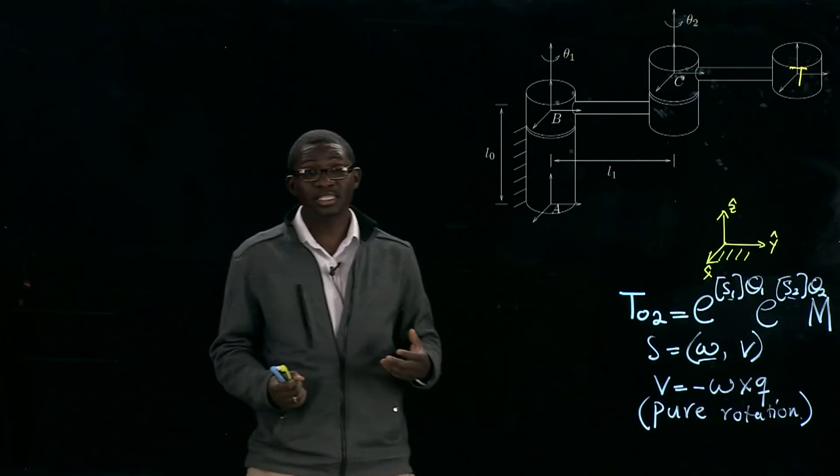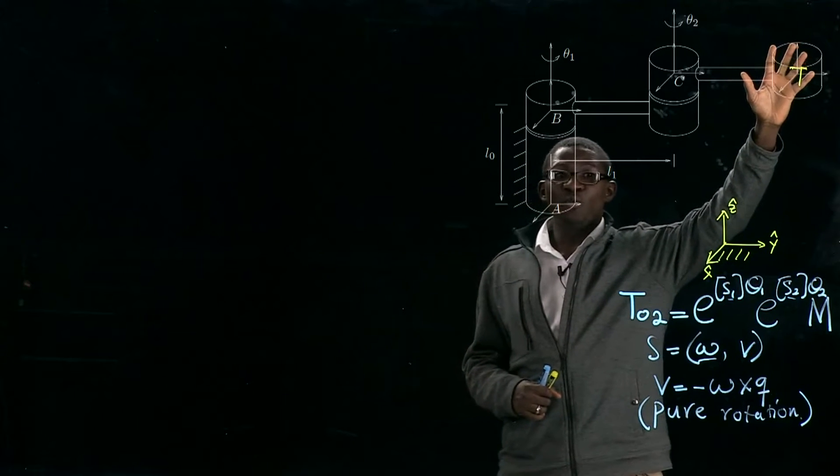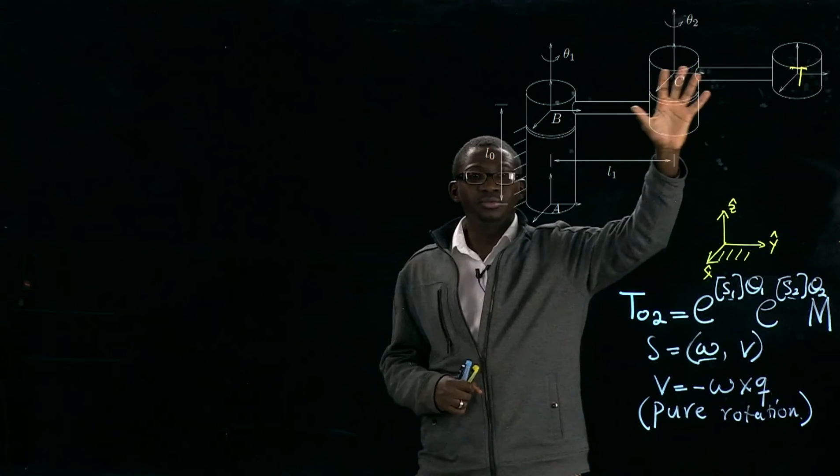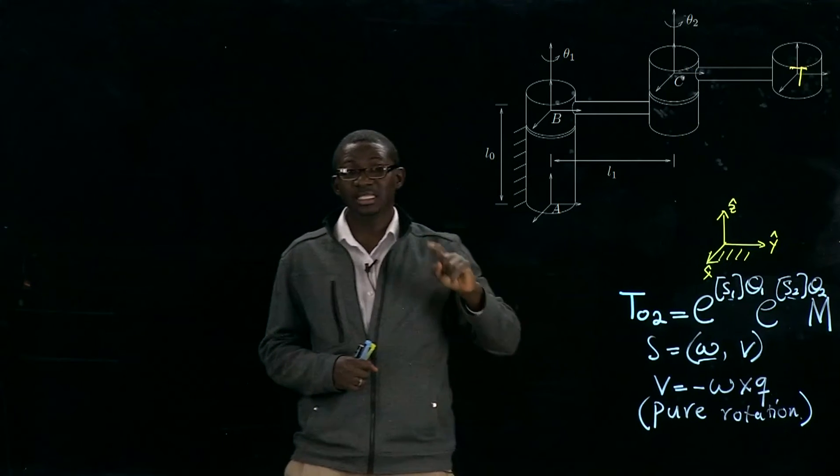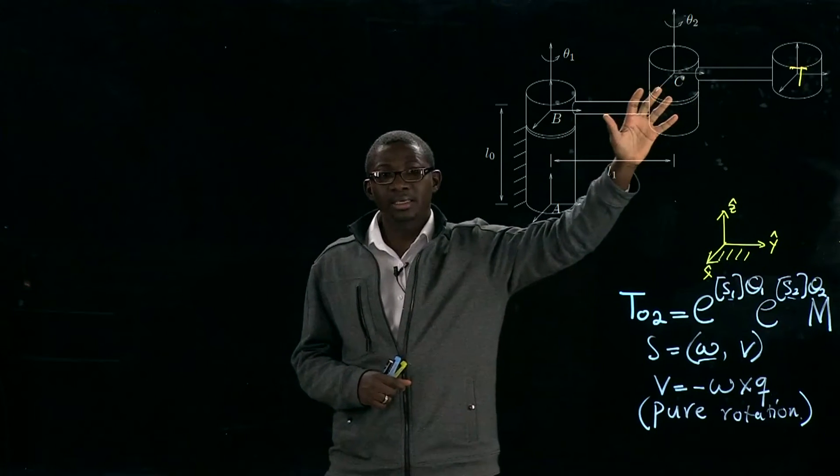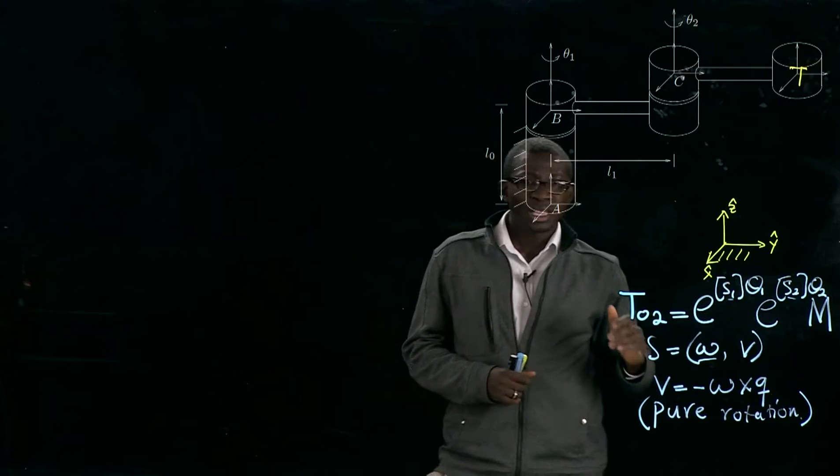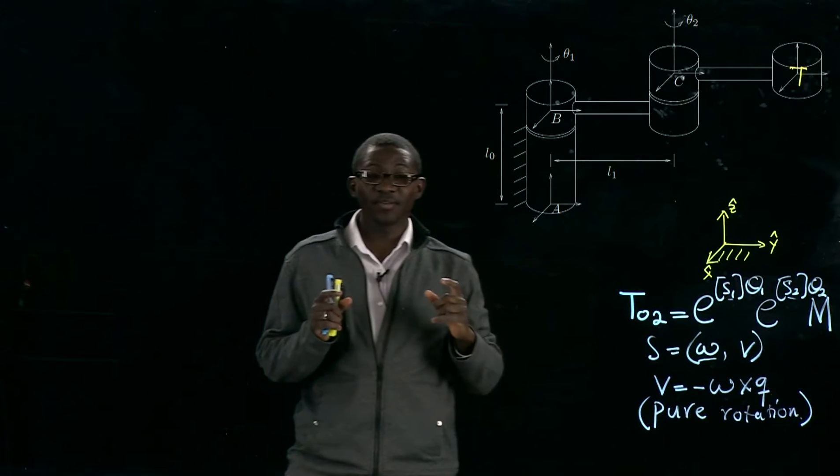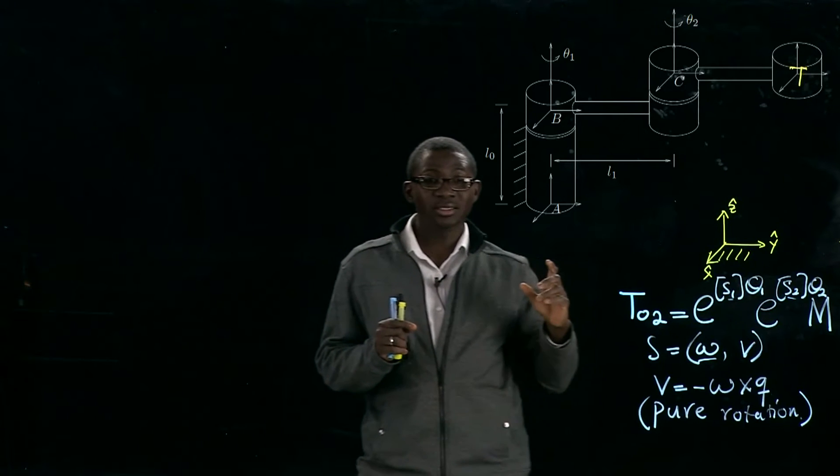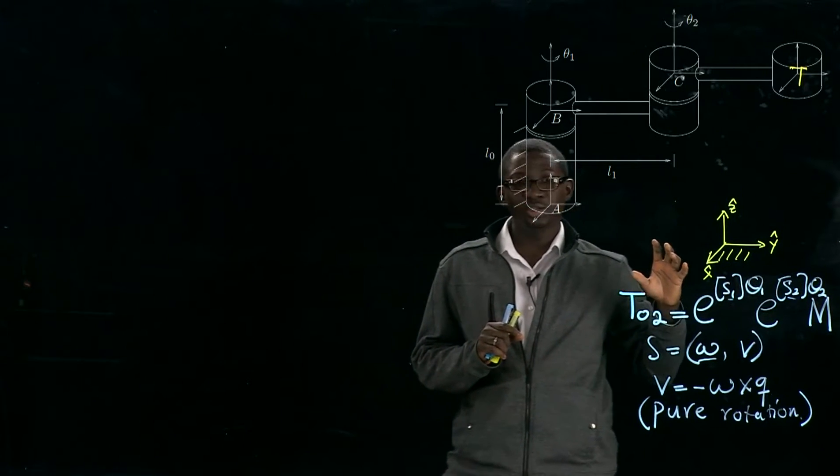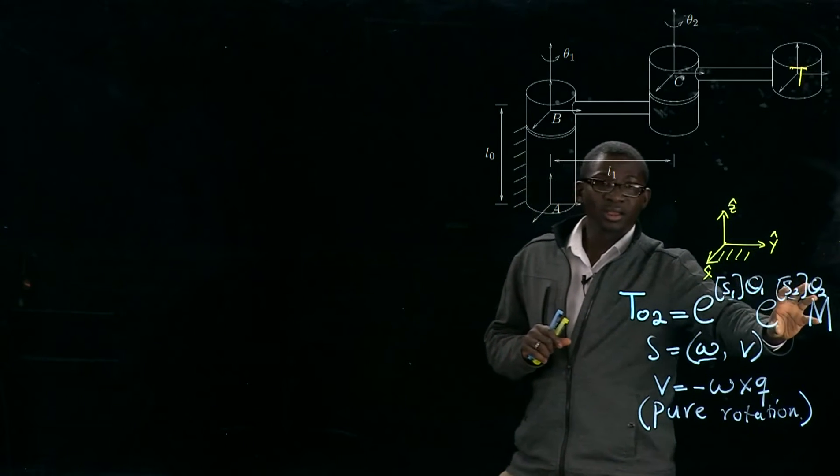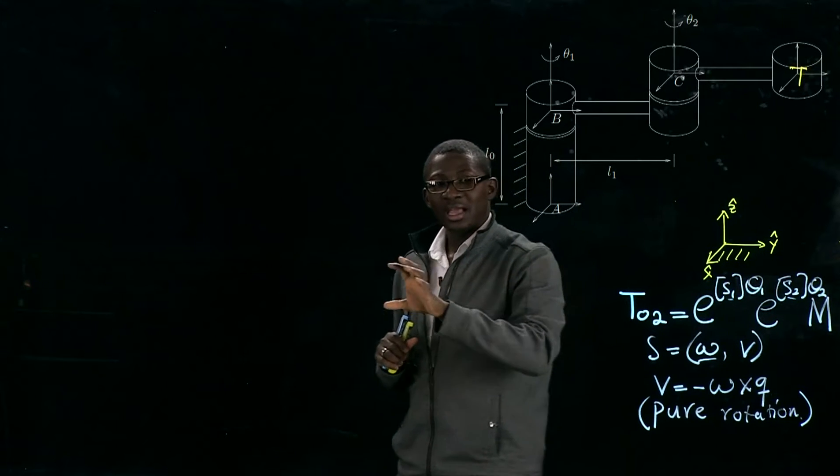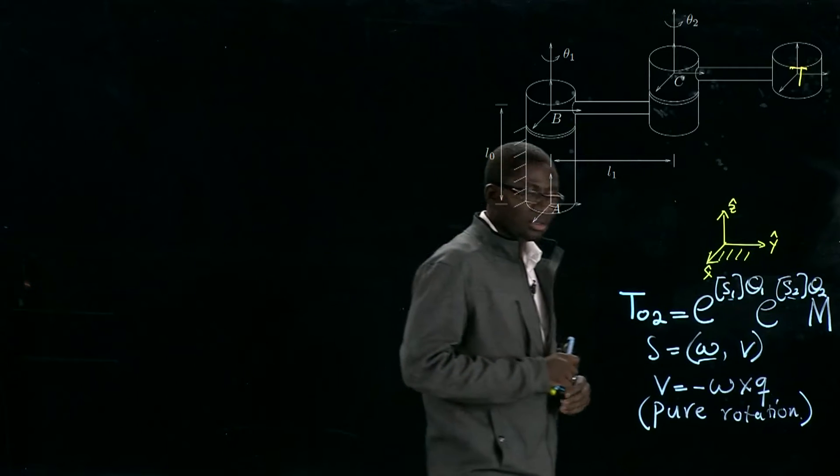This formula is used to determine the configuration of an end-effector given the configuration of each individual adjacent link. In order for us to do that, we first have to find a fixed frame to determine the first configuration of the end-effector, then find a configuration of the individual adjacent links.